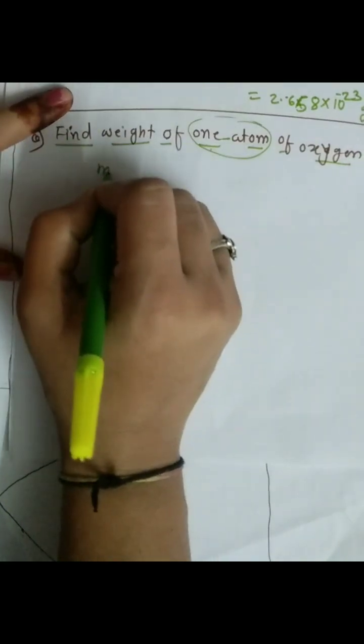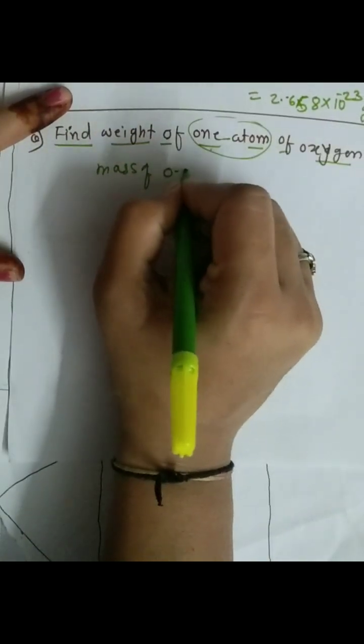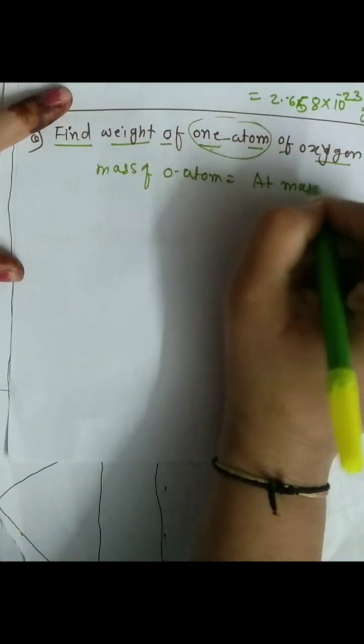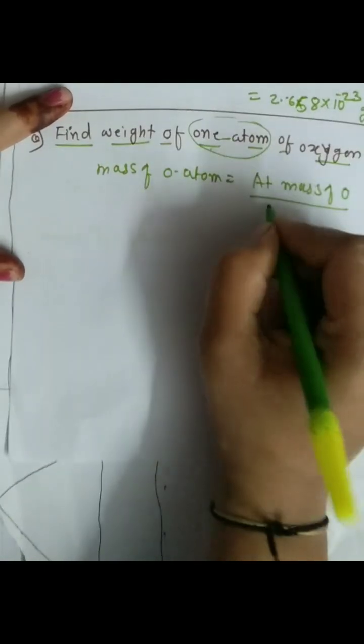For that, we should apply the formula: mass of oxygen atom equals atomic mass of oxygen divided by Avogadro's number.